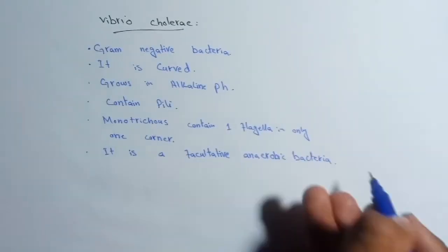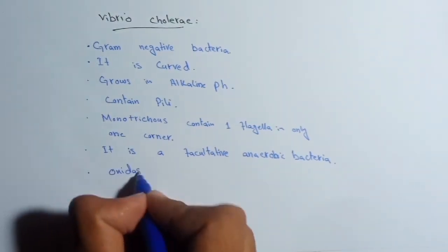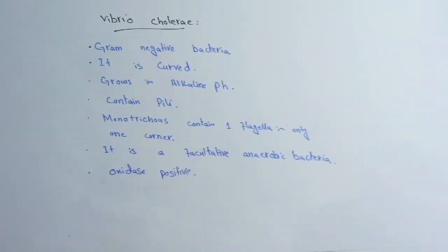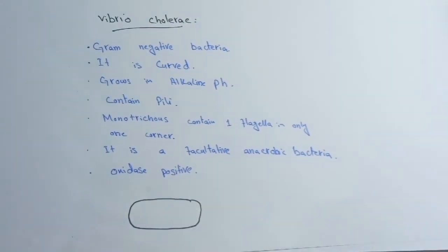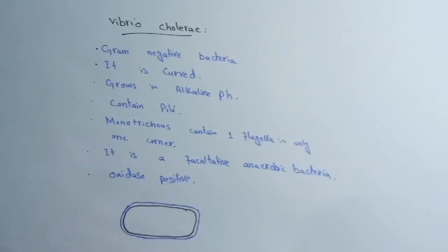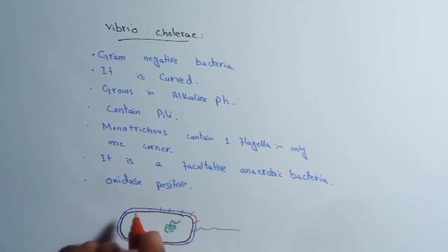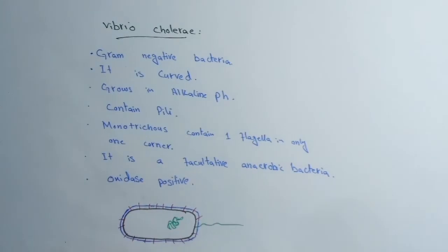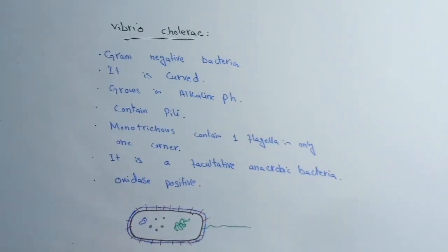V. cholerae is a facultative anaerobic bacteria, meaning it can survive both in oxygen and without oxygen. It is oxidase positive microorganism, meaning it produces cytochrome C oxidase enzymes. Here is the structure of Vibrio cholerae. It contains only one flagellum on one side, it also contains pili on its structure. Here we have chromosomes, plasmids, and ribosomes in its structure.